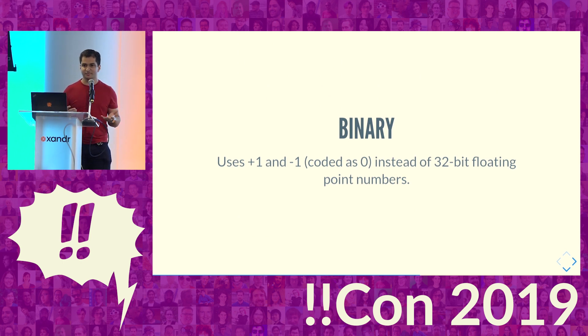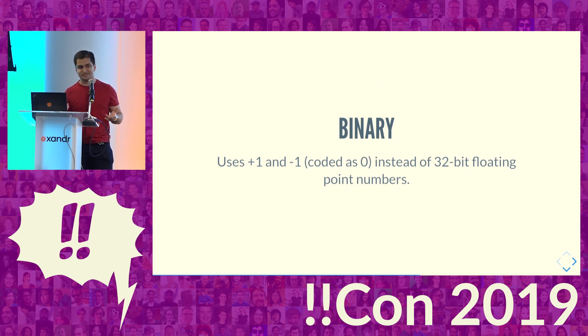Most neural networks use 32-bit floating-point numbers to encode the network. But you don't have to — you can instead use ones and minus ones, encoding minus ones as zeros.